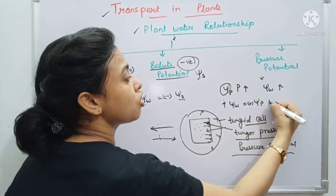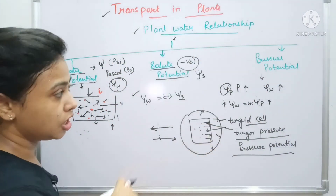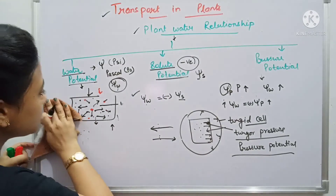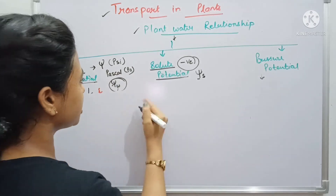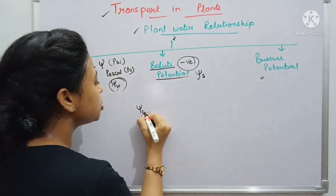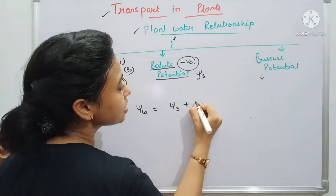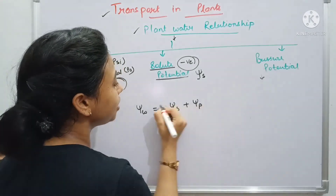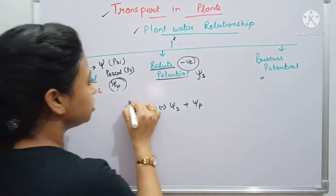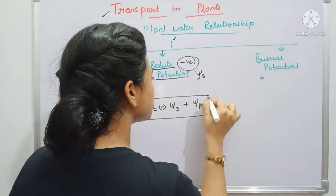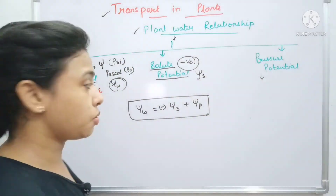There is a complete relationship between these three terms. If water potential increases, pressure also increases, and vice versa. Putting them all into one equation: water potential (ψ) equals solute potential (ψs) plus pressure potential (ψp). Note that solute potential is always of negative sign.